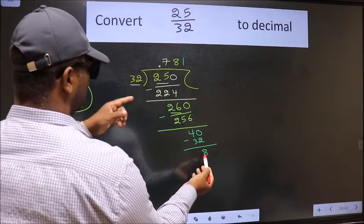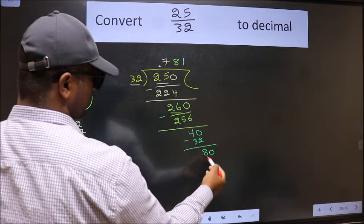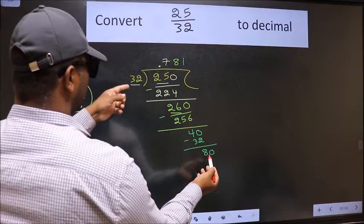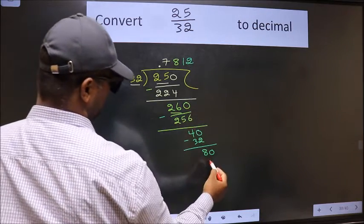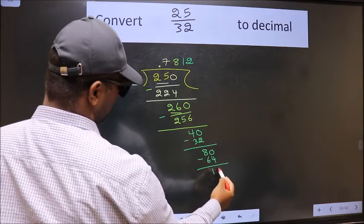8 smaller than 32. We already have decimal, so directly take 0. So 80. A number close to 80 in the 32 table is 32 times 2, 64. Now we should subtract. We get 16.